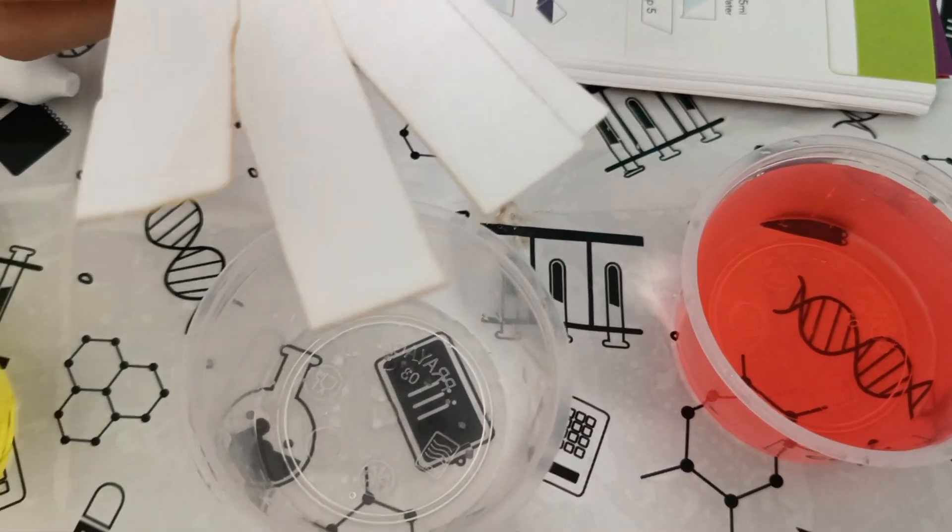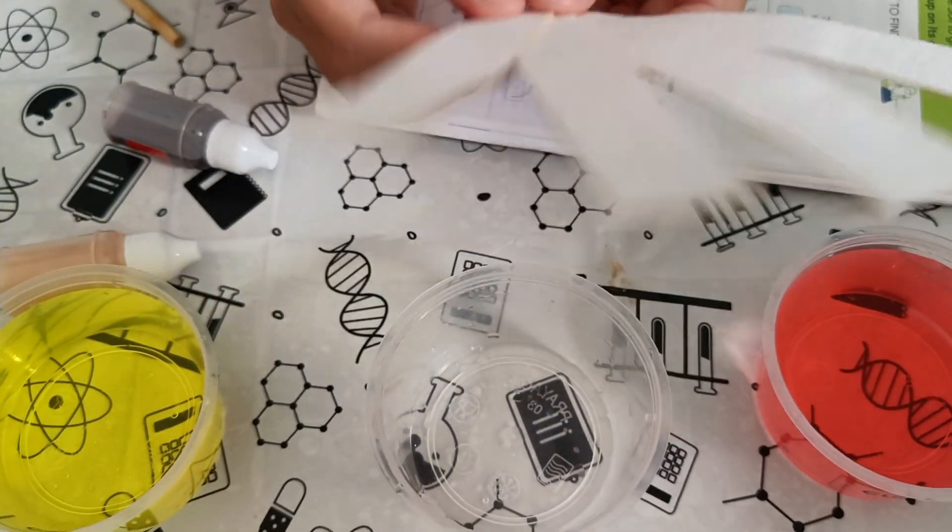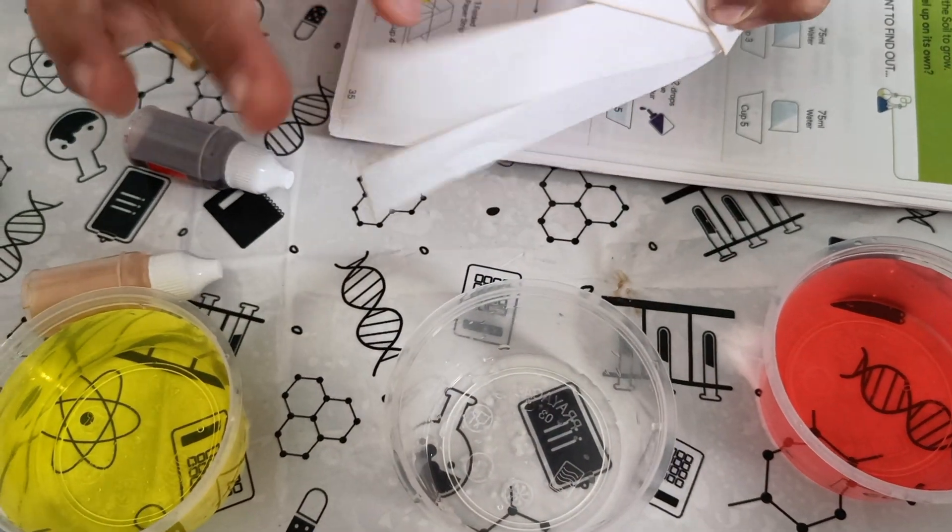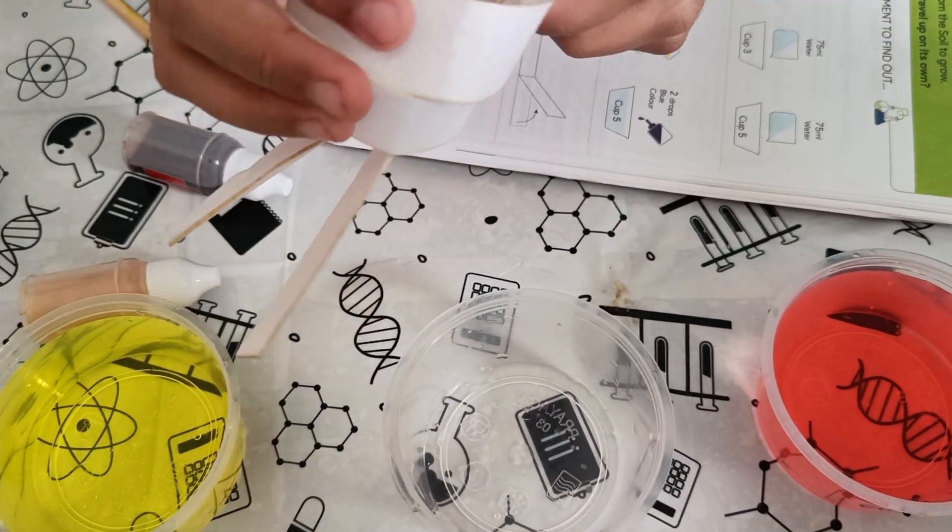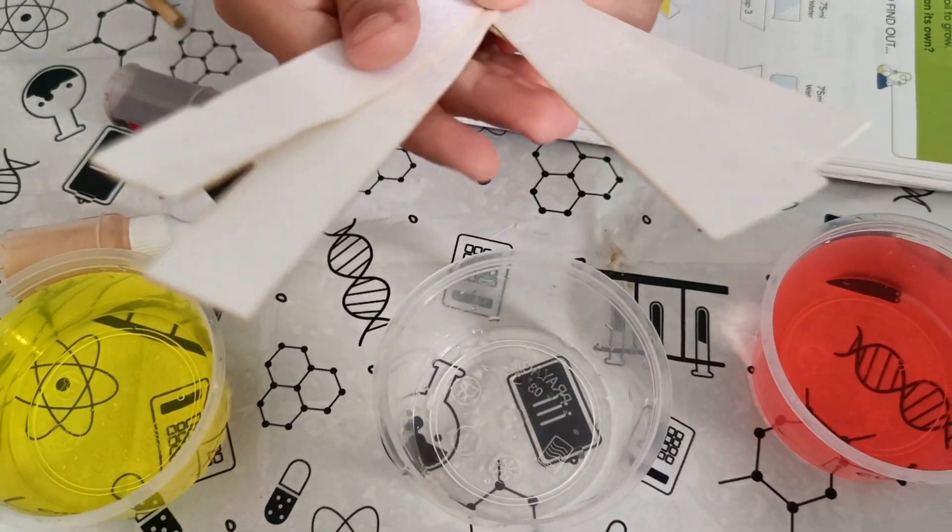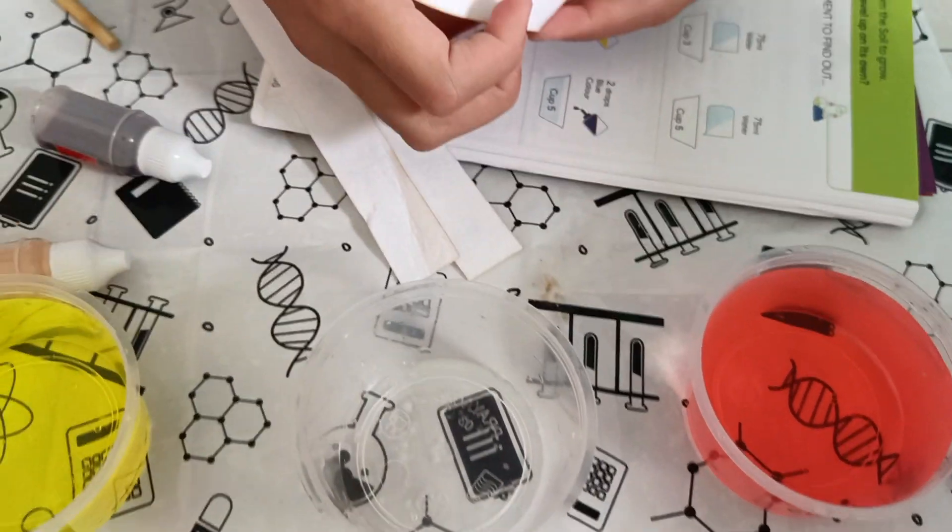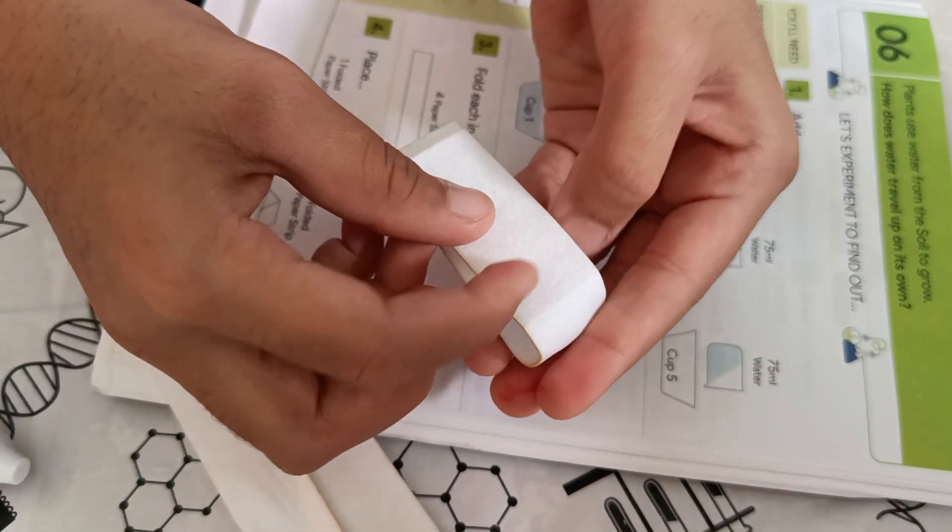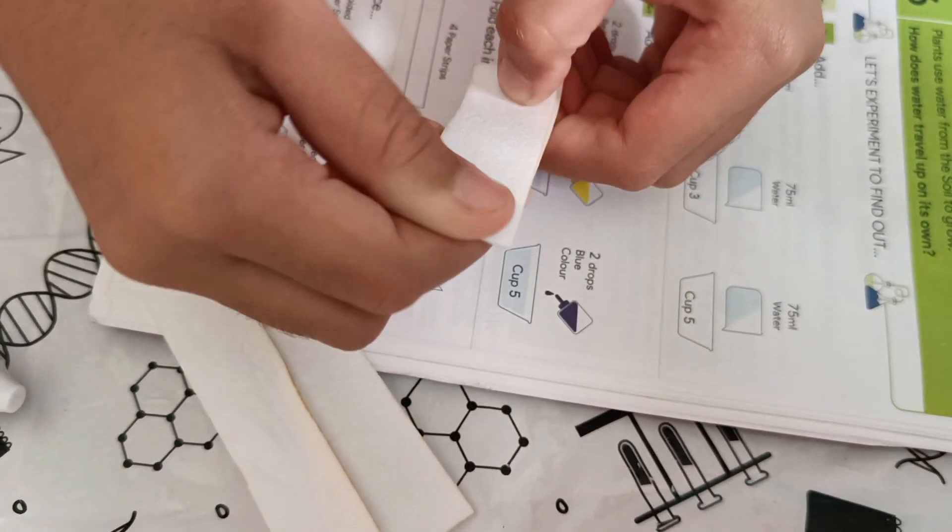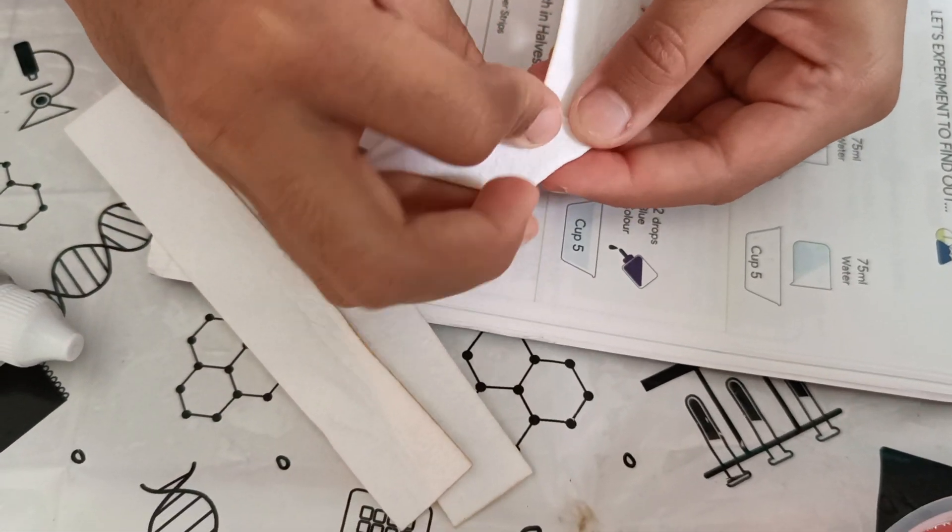Now we have to take these four strips of paper, hard paper. It's exactly like chart paper but soft as a cloth. Now we have to fold it like this. First we'll fold it in half so that it doesn't be wrong, then we'll fold it like this.